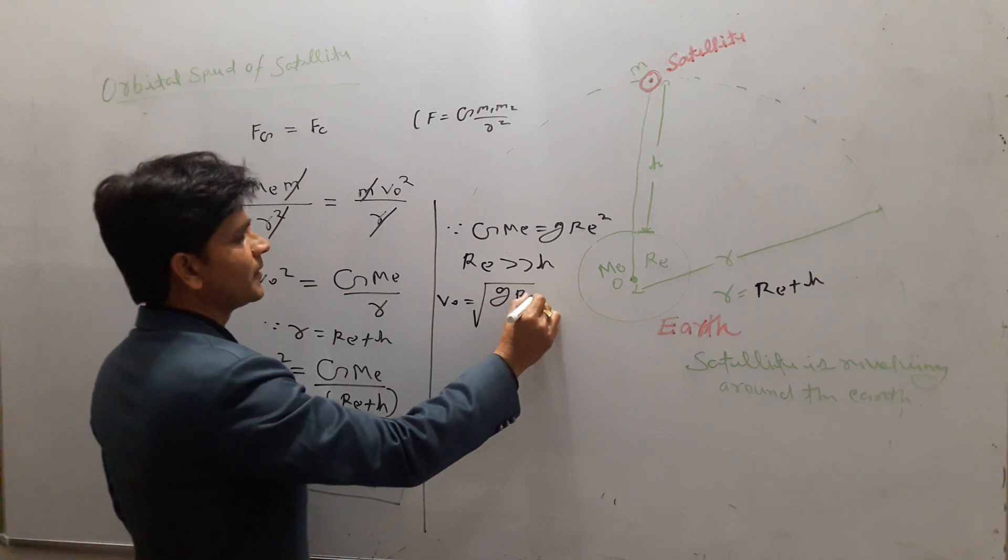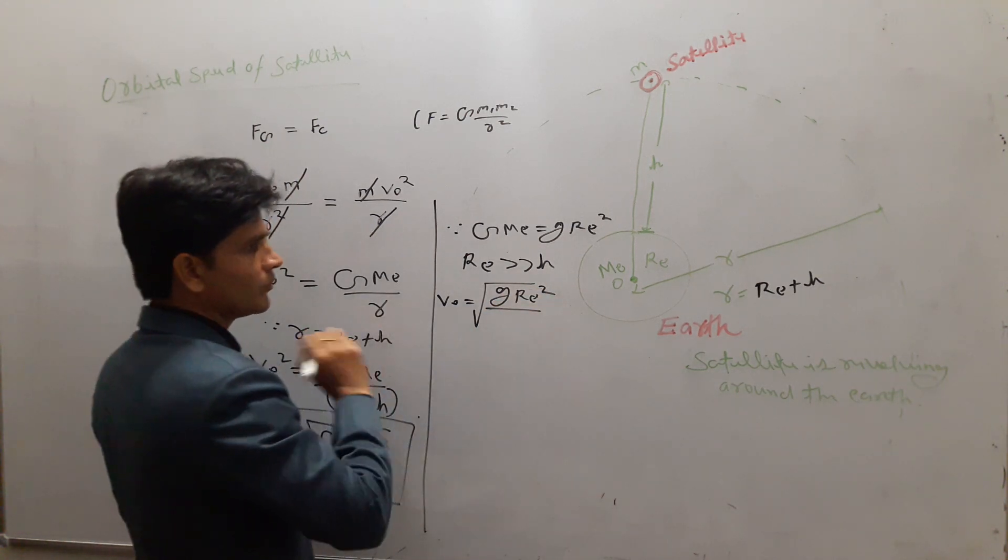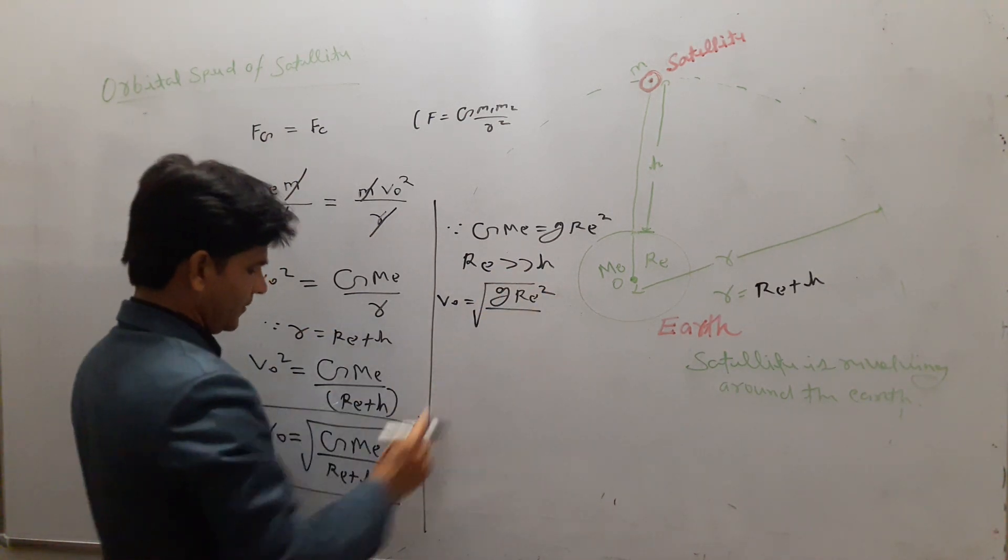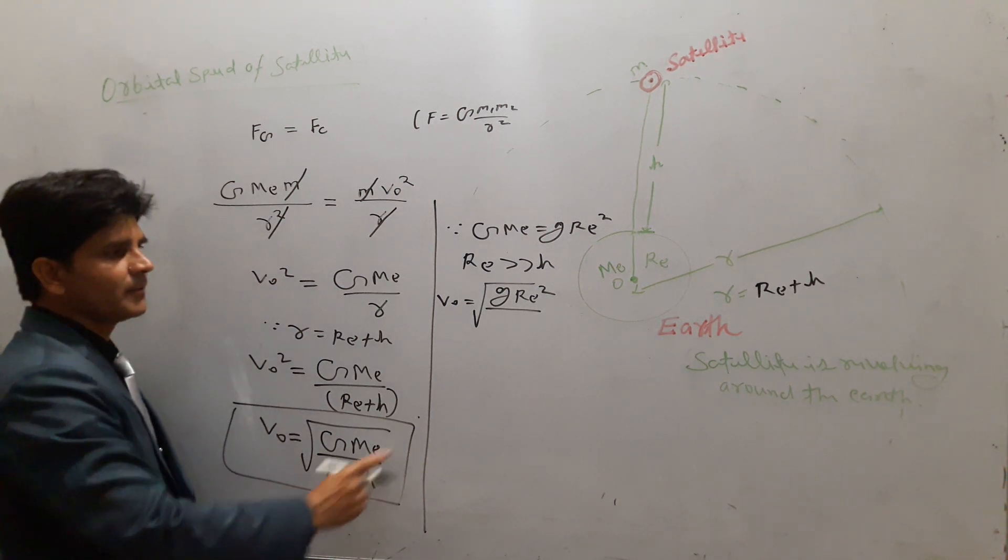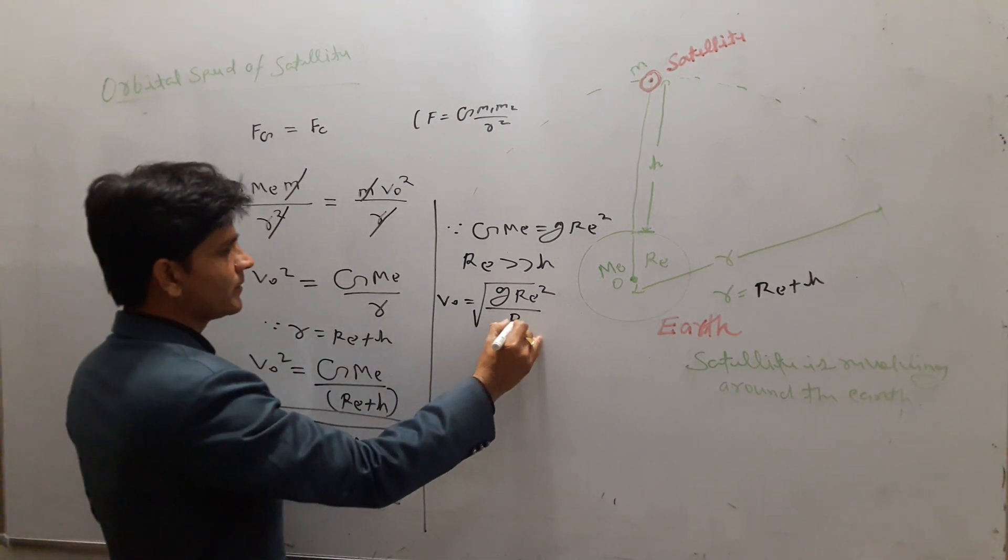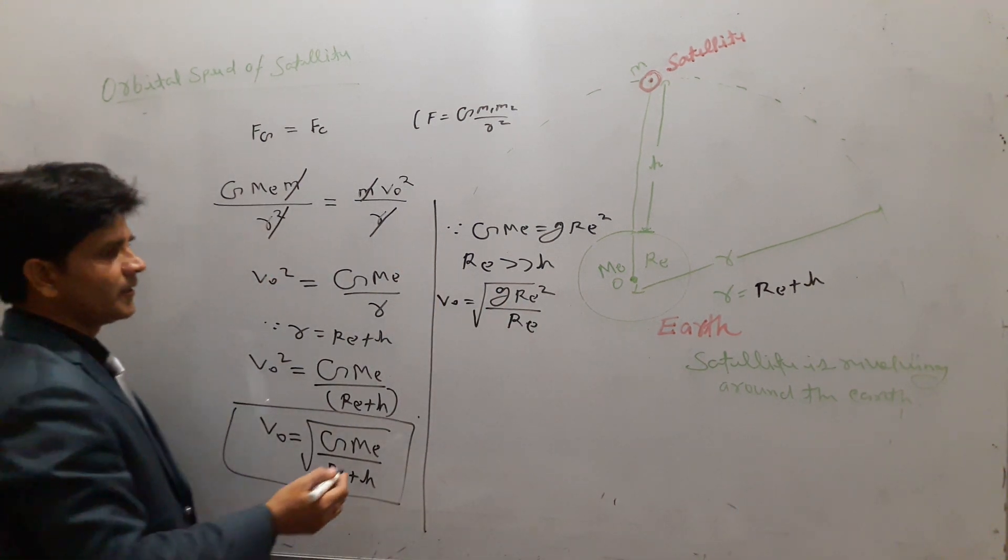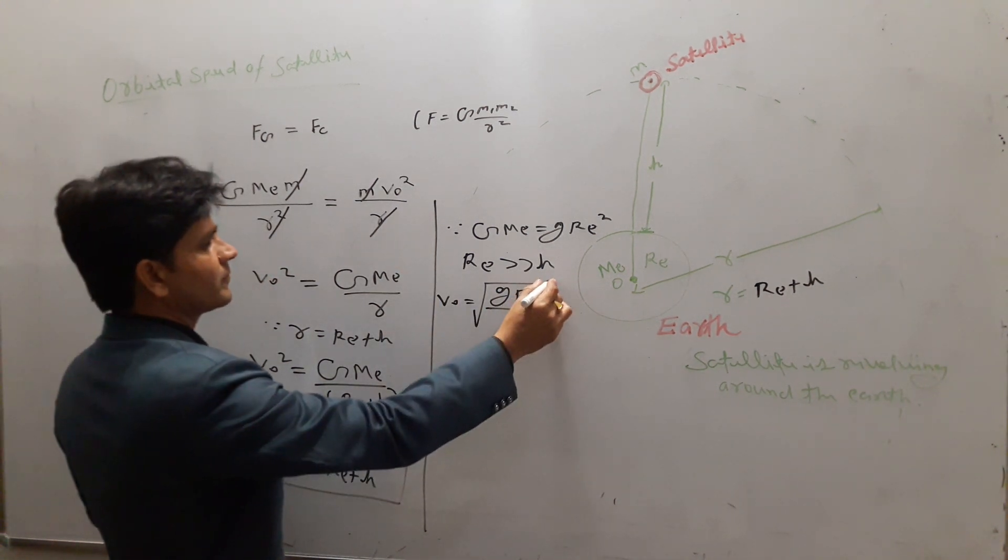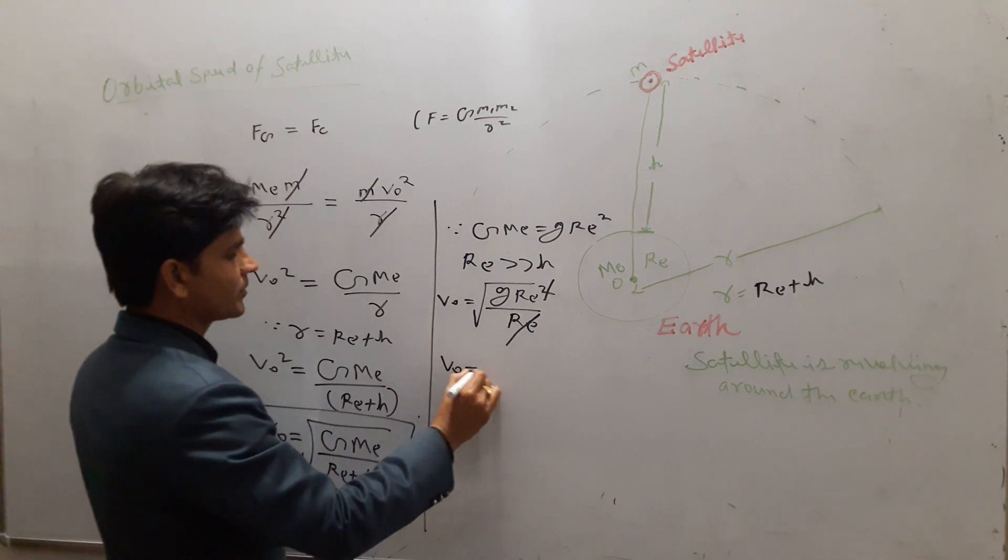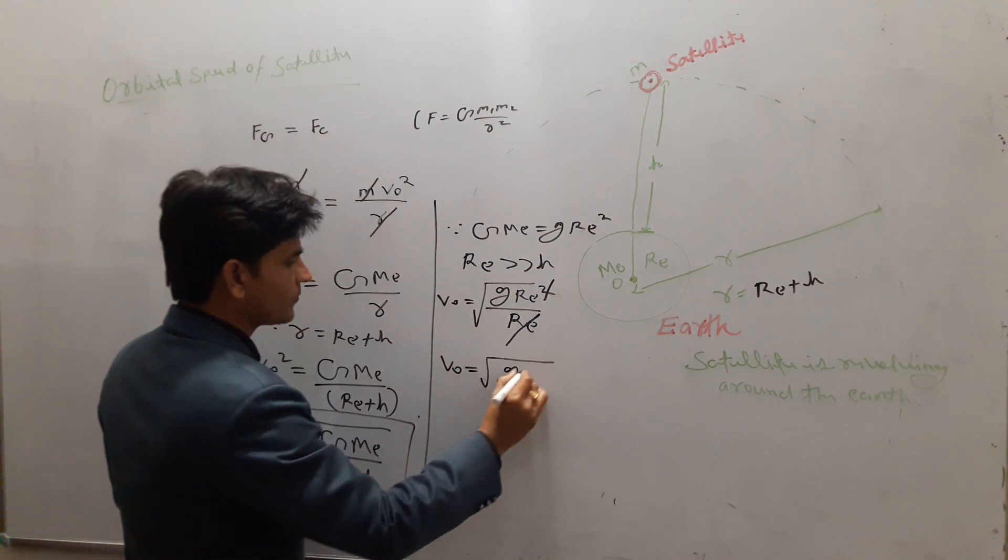Which is √(g × R_E²). And in this term, h will be neglected. We can put only R_E here. Now, the term V_0 equals √(g × R_E). We can also find the value of the orbital speed.